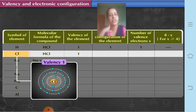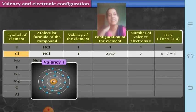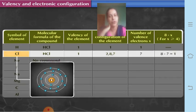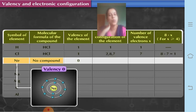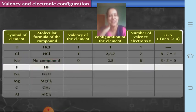Chlorine in hydrochloric acid has valency 1. Its electronic configuration is 2, 8, 7, and the number of valence electrons is 7. Therefore 8 minus x becomes 8 minus 7, which equals 1. For neon, no compound is formed because it has zero valency — it has a complete octet. Its electronic configuration is 2, 8, and the number of valence electrons is 8. So 8 minus 8 equals 0 and the valency is also 0.